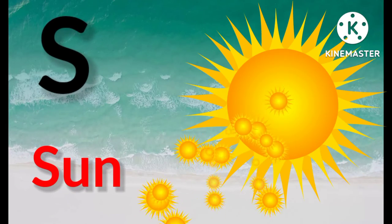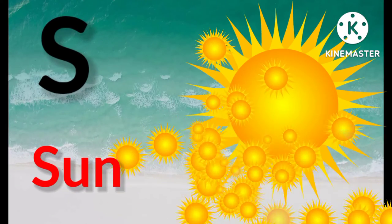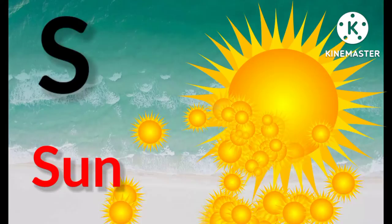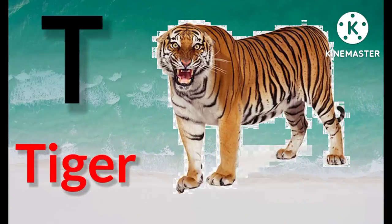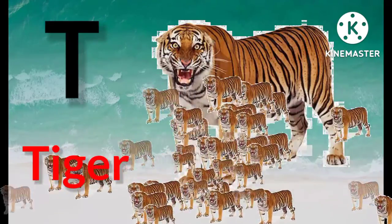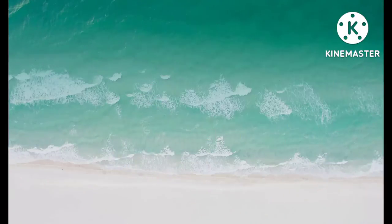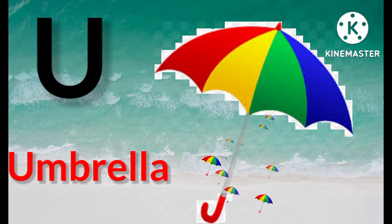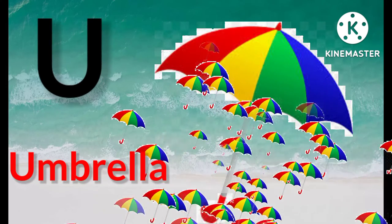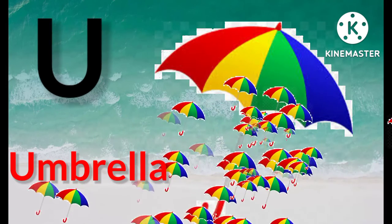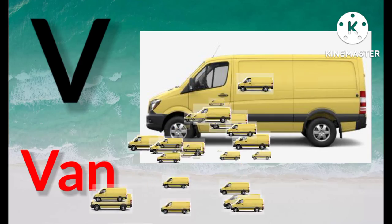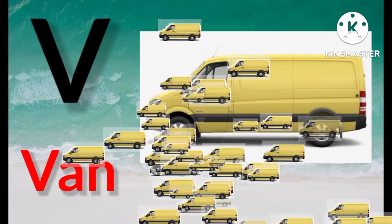S for sun. T for tiger. U for umbrella. V for van.